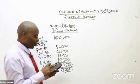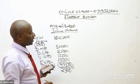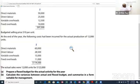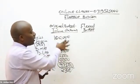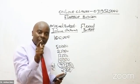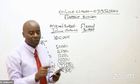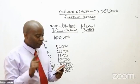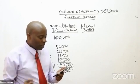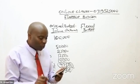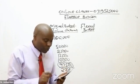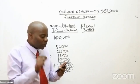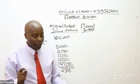This examiner wants us to prepare a flexed budget. A flexed budget is a budget which has been created to reflect the actual number of units. We are going to redraft this original budget, asking ourselves: what if the quantity was equal to the actual production? The actual production given in the question is 12,000 units, and the actual sales were also 12,000 units.